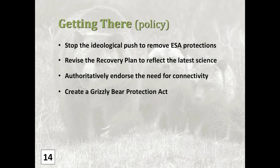I've outlined 10 steps — four related to policy. First, the Fish and Wildlife Service and the states need to stop the ideological push to remove ESA protections for grizzly bears at all costs. The Fish and Wildlife Service needs to revise the recovery plan to reflect the latest best available science. Moreover, they need to embrace the need for connectivity authoritatively in a revised plan.